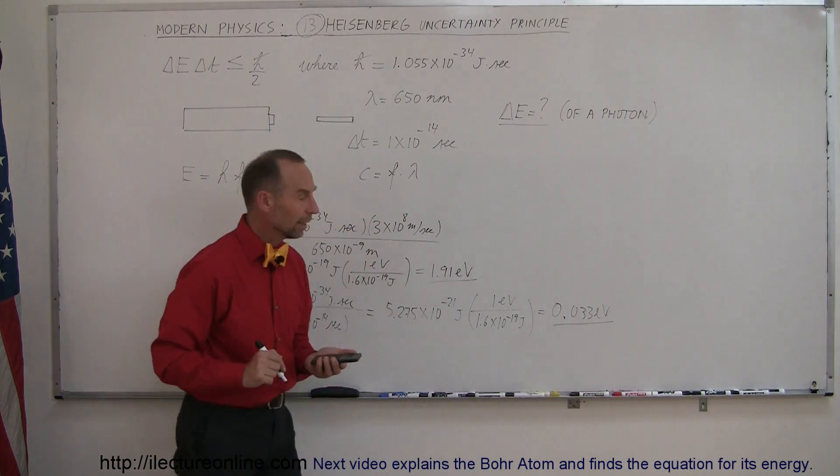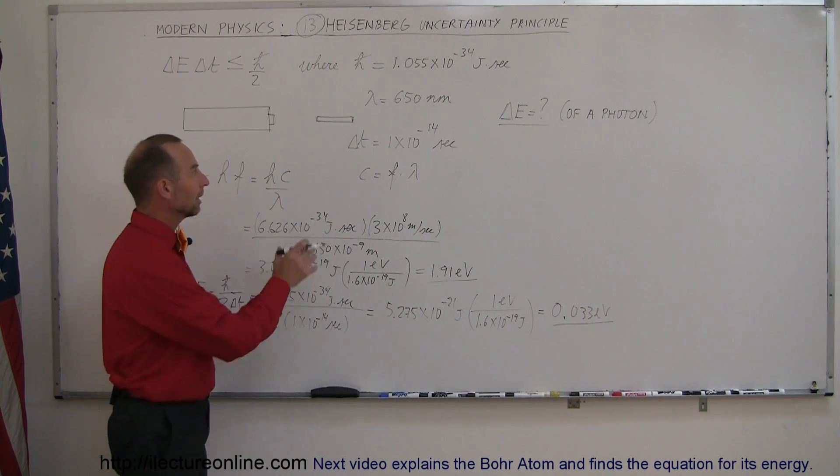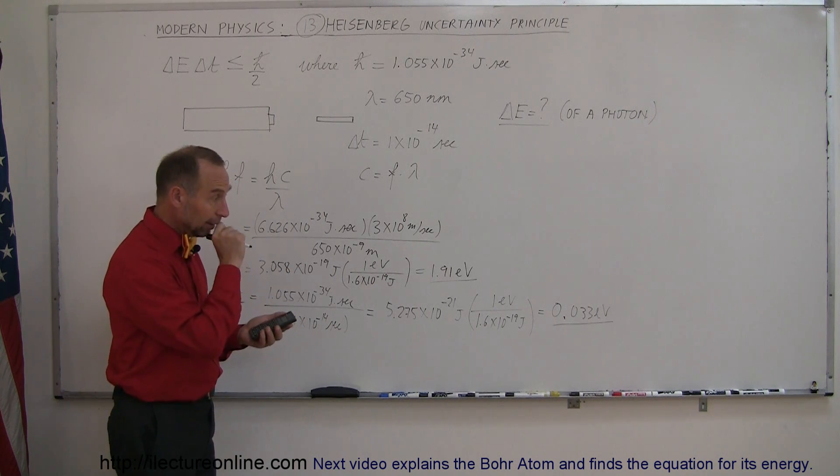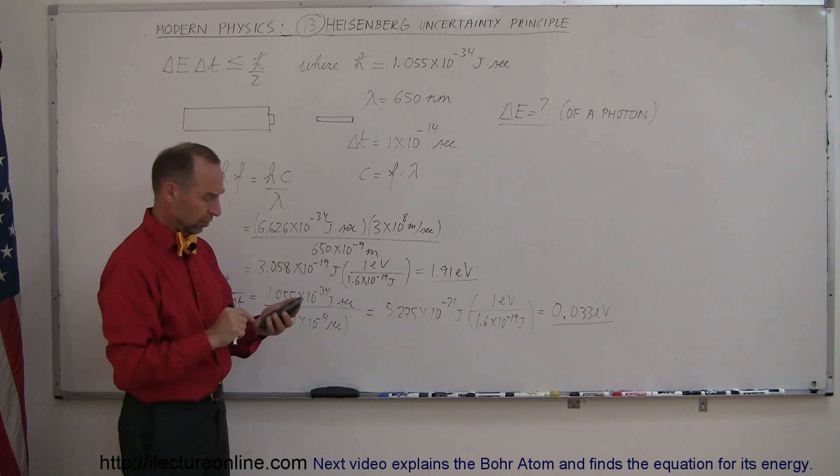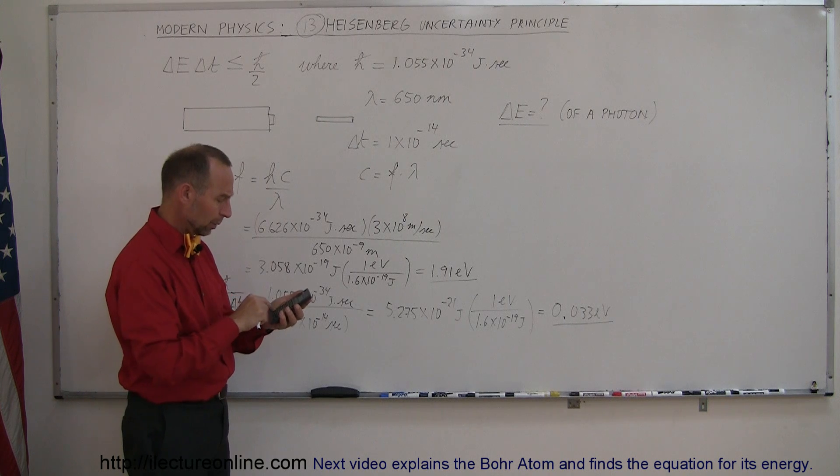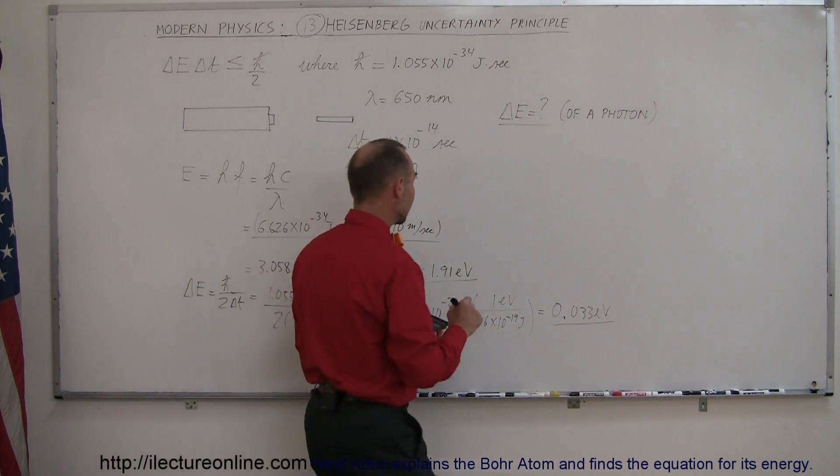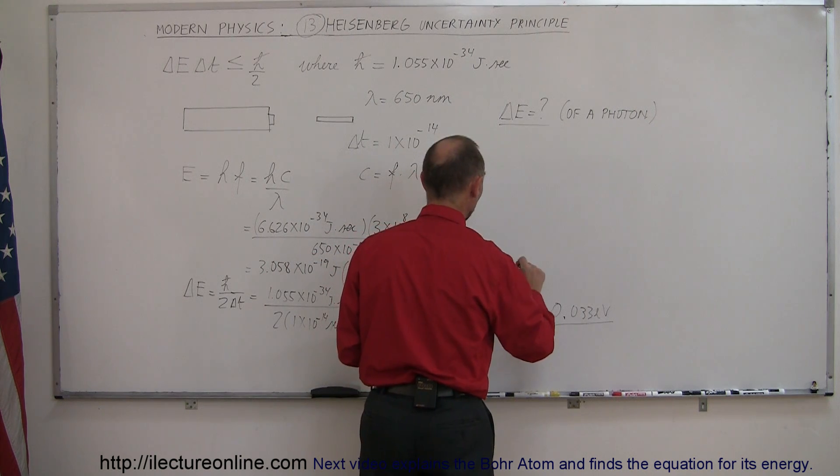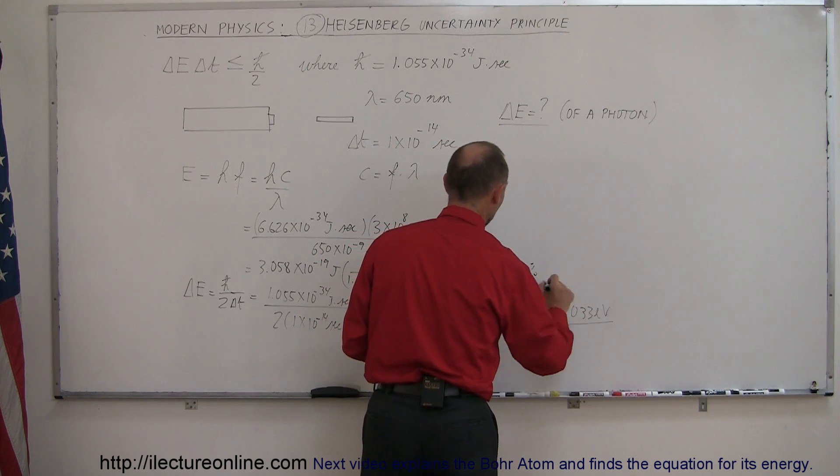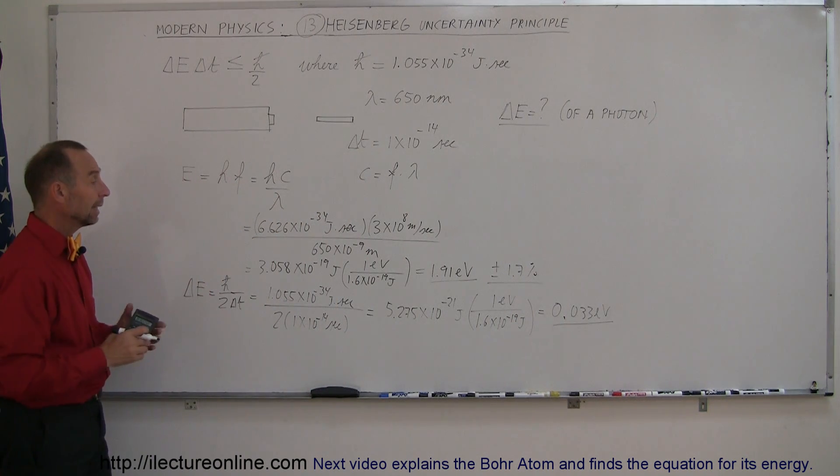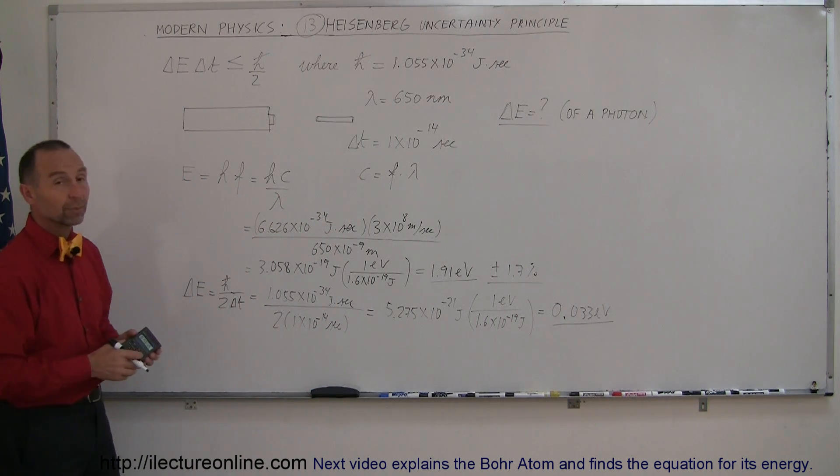So that's the uncertainty in the energy of this photon in that small portion of a beam of light. As a percentage, divide that by 1.91, and that would be 1.7 percent. So the uncertainty in this case would be 1.7 percent of the total energy. And that's how we find the uncertainty in the energy of a photon in this particular example.